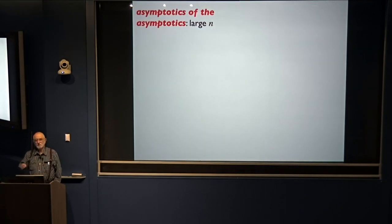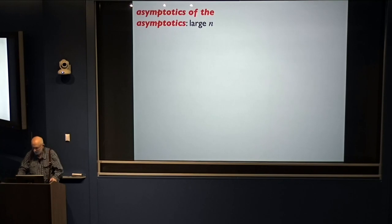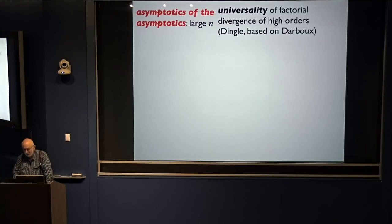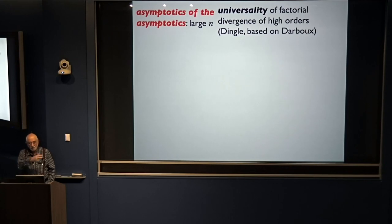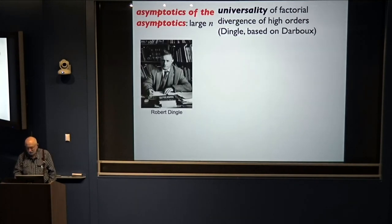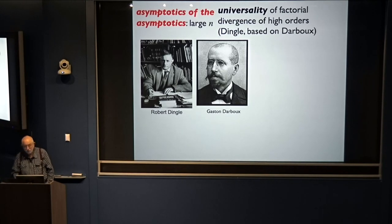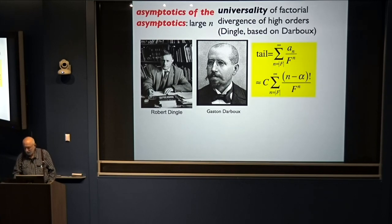The asymptotics of the asymptotics: the asymptotics is large f, the asymptotics is large n — what are the high-order terms of this series? There's a universality in them. This was clearly understood, first of all, by my PhD supervisor Bob Dingle, whose work I didn't appreciate until much later. The result is that the tail — high orders — is basically always a factorial divided by a power, with little shifts and some constants.